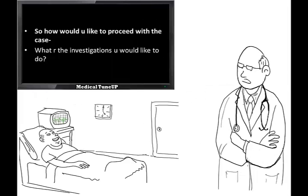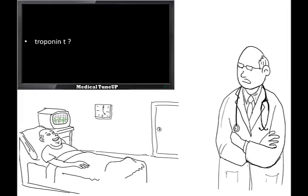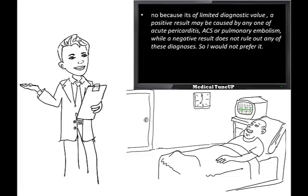So how would you like to proceed with the case? What investigations would you like to do? I would like to perform an ECG and echocardiography. Would you not do troponin-T? No sir, because it is of limited diagnostic value. A positive result may be caused by acute pericarditis, acute coronary syndrome, or pulmonary embolism, while a negative result does not rule out these diagnoses. So I would not prefer it, sir.